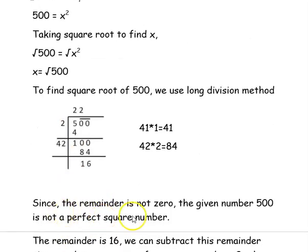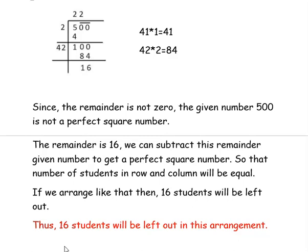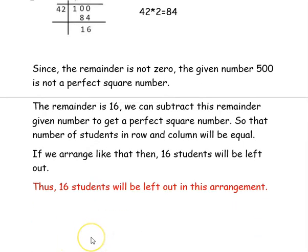Since the remainder is not 0, the number 500 is not a perfect square. We subtract this remainder from the given number to get the nearest perfect square, meaning 16 students will be left out. If we arrange all the students in rows and columns as equal, then 16 students will be left out of this arrangement. Hope you have understood how to estimate the square root. Thank you for watching the video.